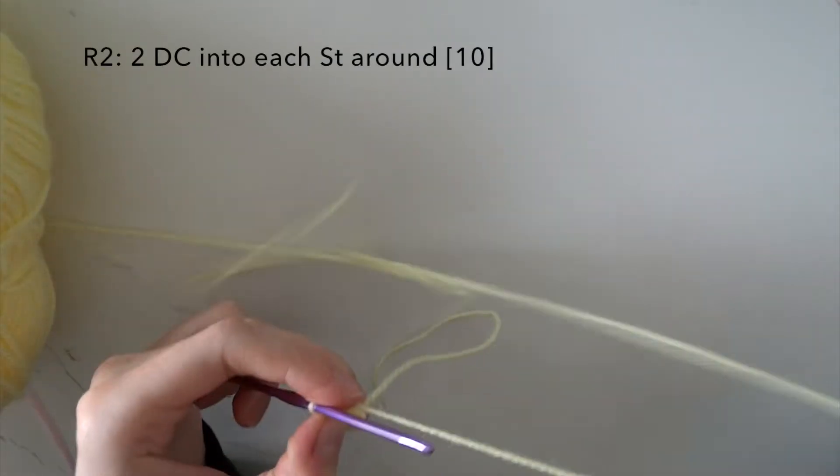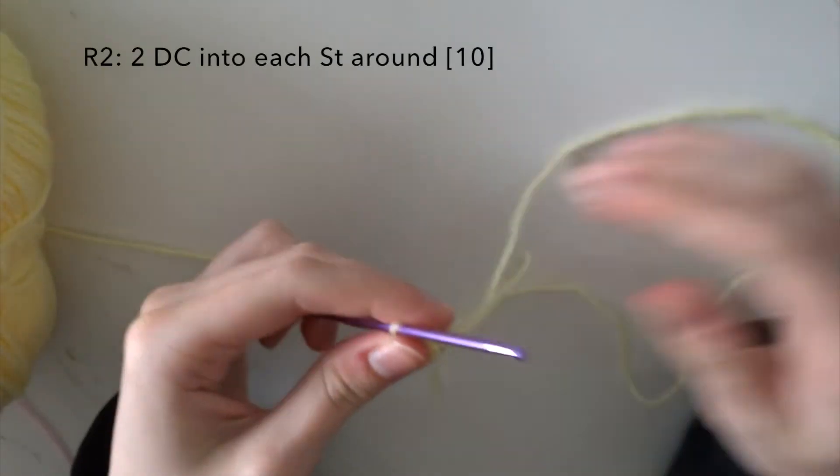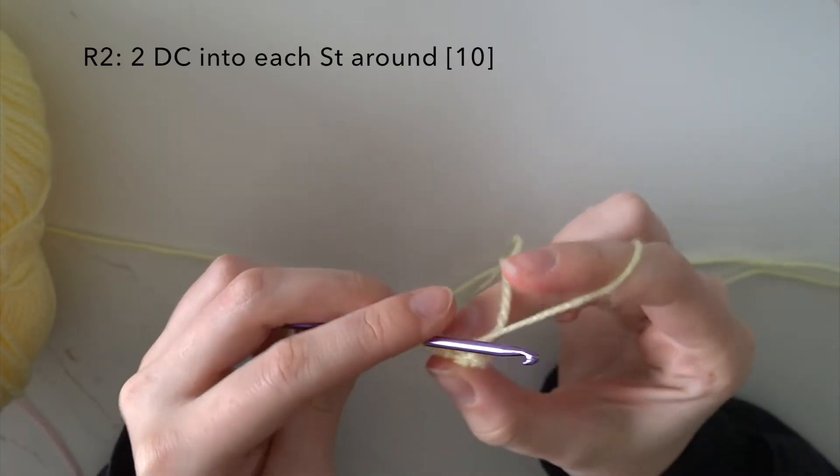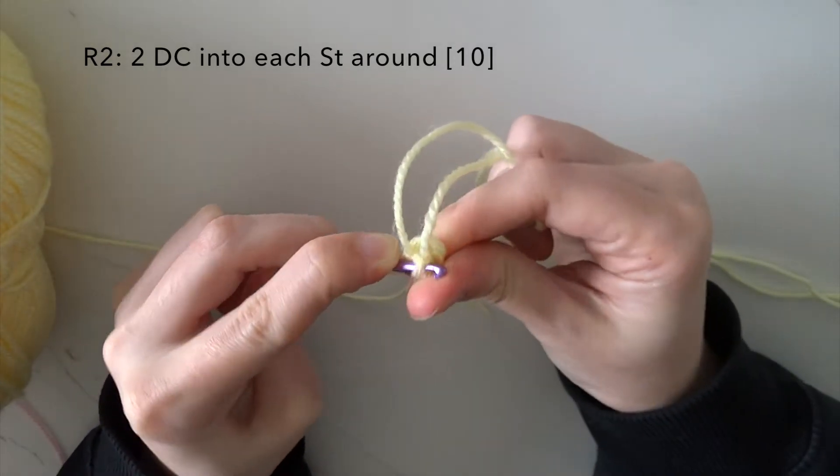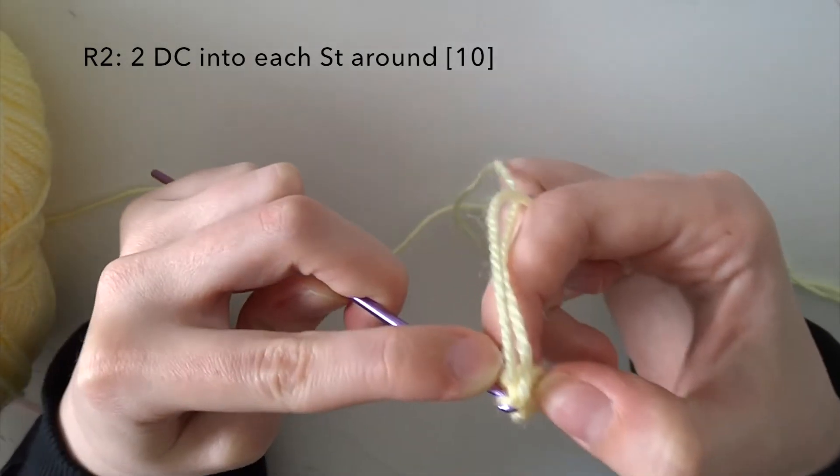In round two you need to do two double crochet in each stitch around the magic ring. This is also equivalent to five increased stitches.